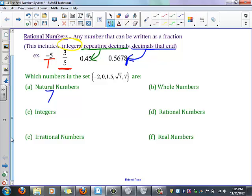Whole numbers are the natural numbers plus 0, so we'll have 0 and 7. Integers are the negative and positive natural numbers plus 0, so in our case we'll have negative 2, 0, and 7.